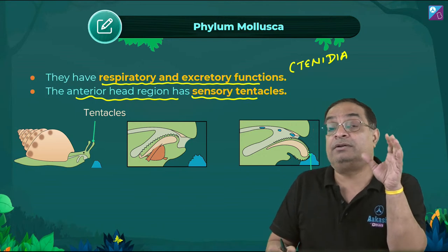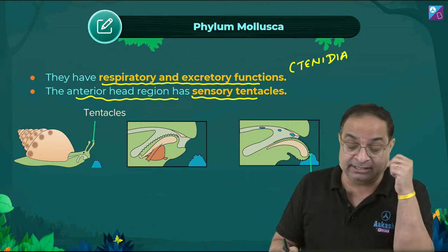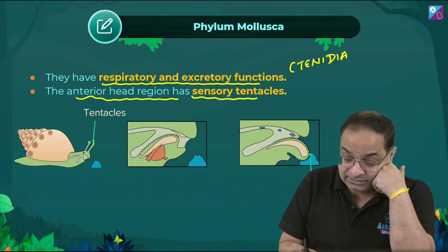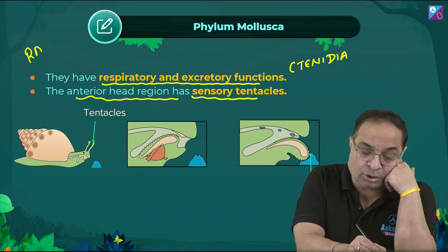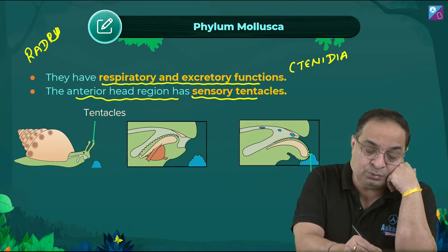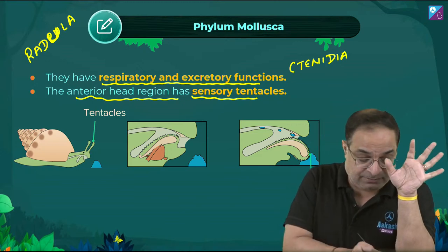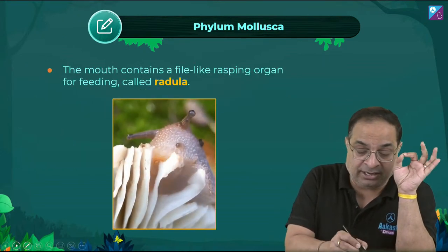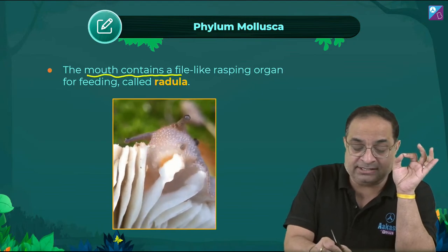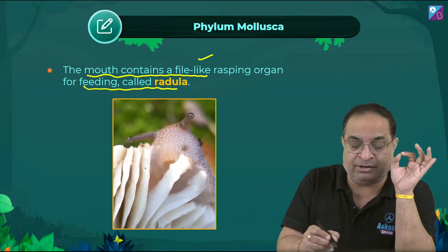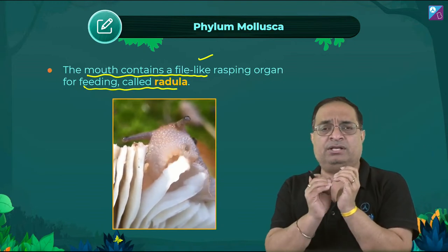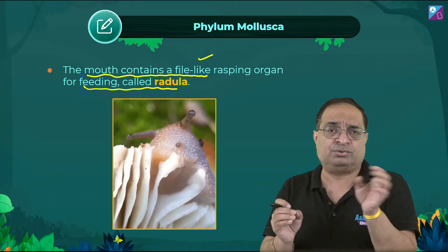A unique and important structure in Mollusca is the radula (R-A-D-U-L-A) — a file-like rasping organ present in the buccal cavity used for feeding. Mouth contains a file-like rasping organ for feeding called the radula. This is a very important feature of Phylum Mollusca.